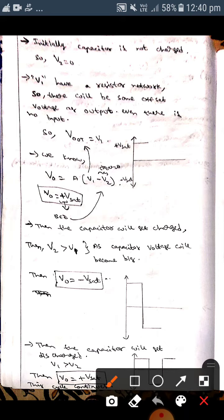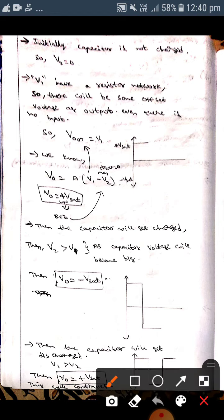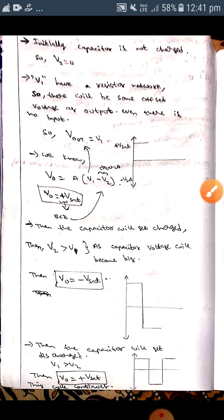Then the capacitor will be again discharged, which means V1 is greater than V2. If V1 is greater than V2, the output value will be positive, then V0 will be plus Vsat. As it becomes plus Vsat, the waveform will become like this. It will go upwards. So in this way, the square waveform will be produced. I hope you understand guys, thank you.